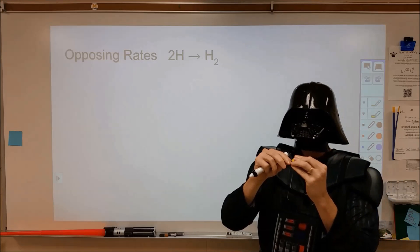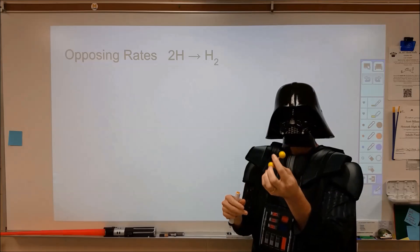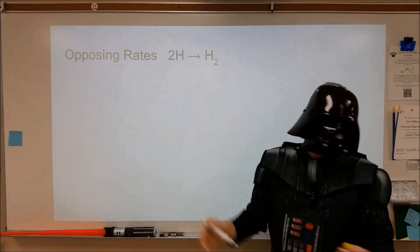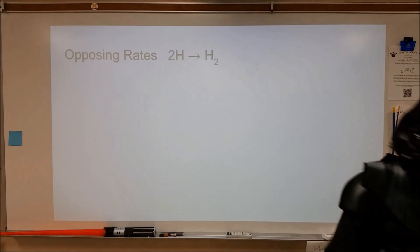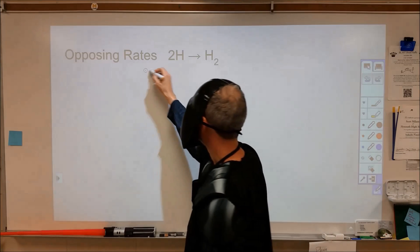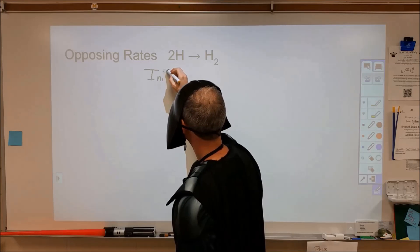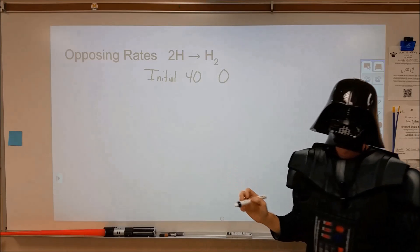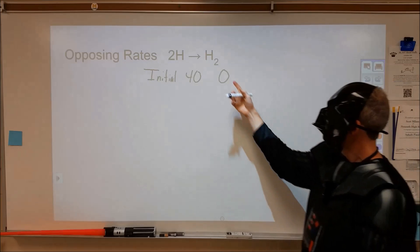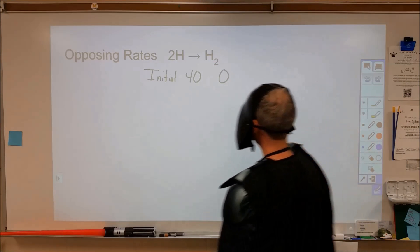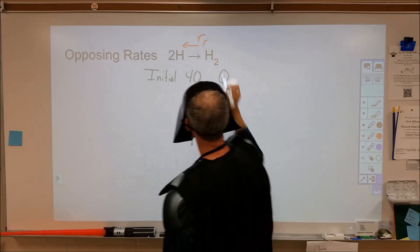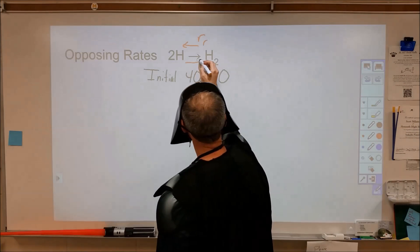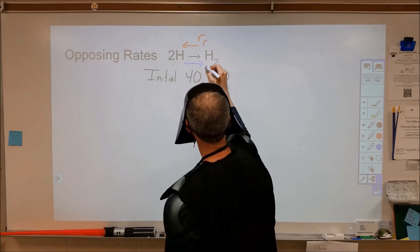It turns out that it's much easier to take them apart than put them together. So if we had two people — one person putting them together and one person taking them apart — what we would find is that the opposing rates are not equivalent. Let's assume we start with 40 spheres and zero put together. Because there are no H2s to start, there's not going to be any reverse reaction rate. The only thing going on will be the forward reaction rate.